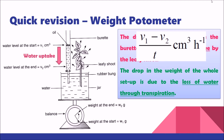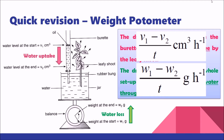For the balance, the drop in the weight of the whole setup is due to the loss of water by transpiration. We assume there is no net change in the leafy shoot itself, so the weight drop reflects water loss only. Therefore W1 minus W2 gives the amount of water loss, and dividing by time gives the rate of water loss in grams per hour. That's a quick revision of the first two data sets.